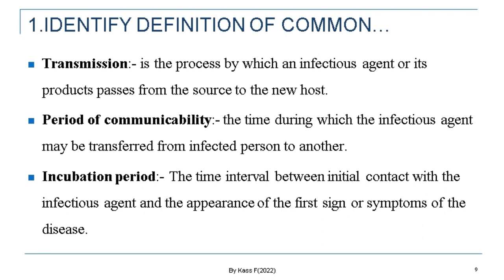When you come to the definition of terms, let us see one by one. Transmission is the process by which an infectious agent or its products pass from the source to the host. Period of communicability means the time during which the infectious agent may be transferred from an infected person to another. Incubation period is the time interval between initial contact with the infectious agent and the appearance of the first signs or symptoms of disease.